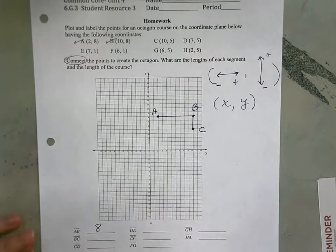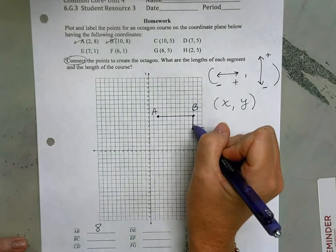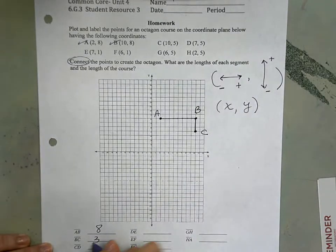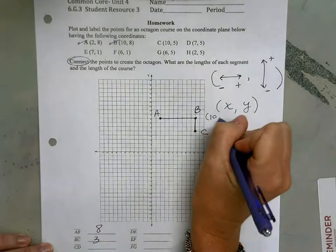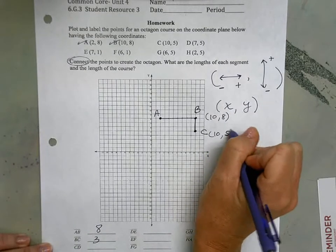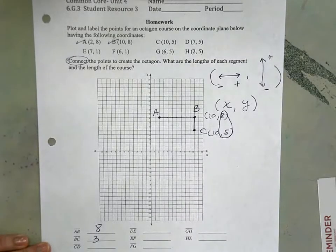So my segment BC, if I count from B to C, I go 1, 2, 3 numbers. We also talked today that if this point was 10, 8, and this point was 10, 5, you could find the difference between those two numbers. And that also gives us the 3.